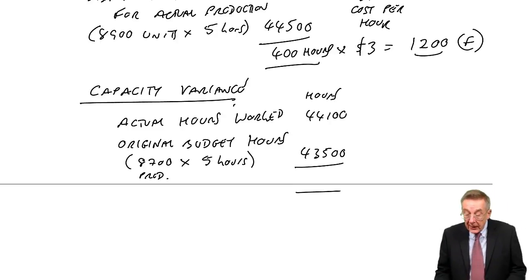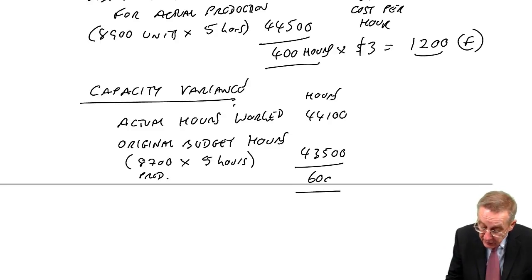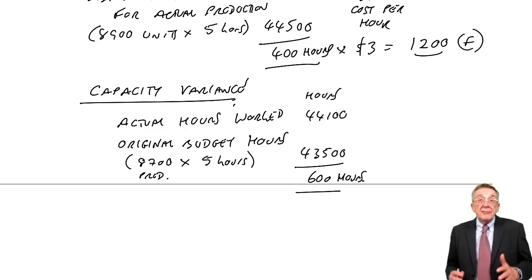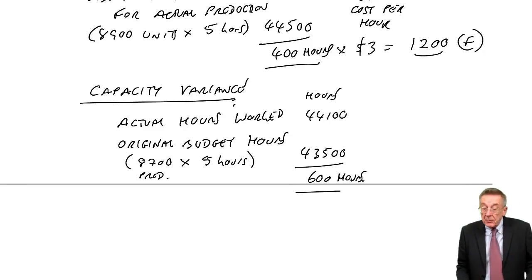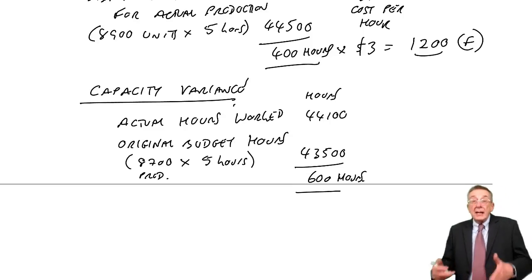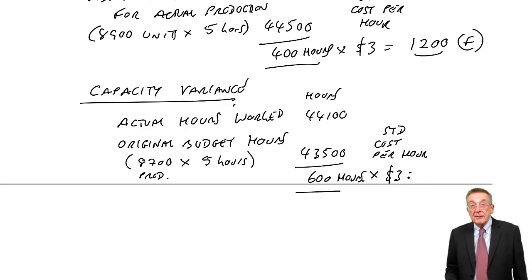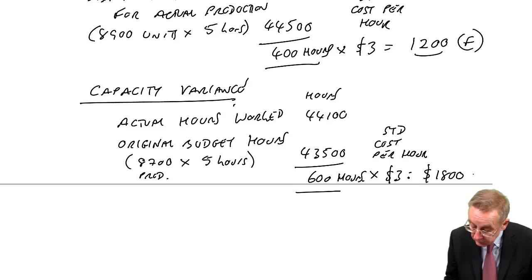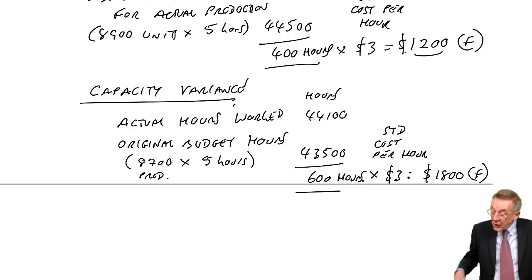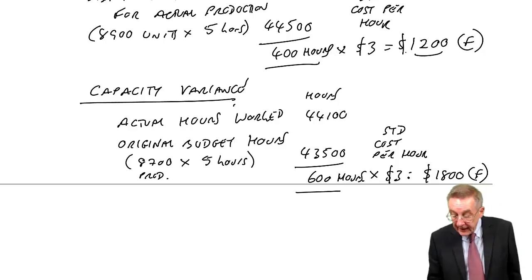So that's how many hours we thought we'd have. We actually got more hours. We got an extra 600 hours. And if we've more hours, we can produce more. And how much does that benefit us? Well, at standard cost per hour, for fixed overheads is $3. That benefits us $1,800. If you get more labour, we can produce more. That's good. It's favourable.